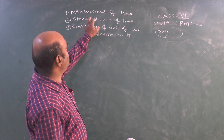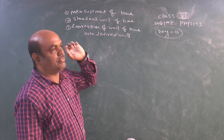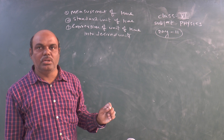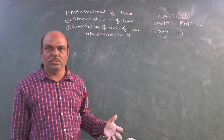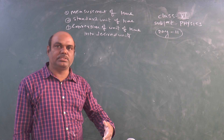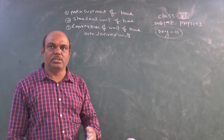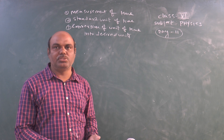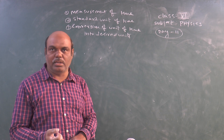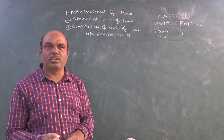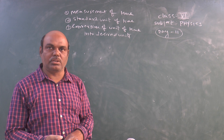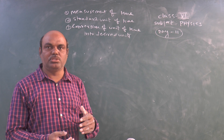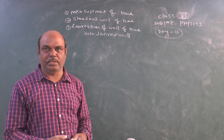First, Measurement of Time. Generally we measure time by using clocks, wall clocks, and watches. But in olden days we used sundial, sand clock, and water clocks — these are the devices or instruments used to measure time.